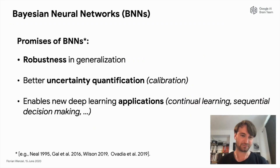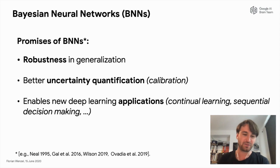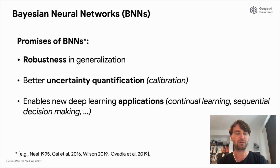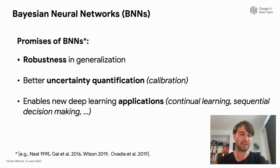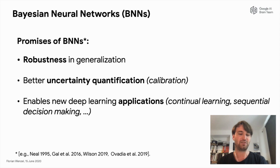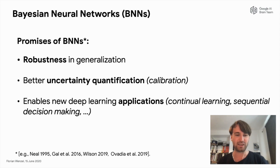There are many amazing promises coming with Bayesian neural networks. Because we average over multiple models, we expect BNNs to be more robust in generalization. Second, we expect that BNNs lead to better uncertainty estimates — these models know when they don't know. And finally, we are promised that BNNs are better suited for new deep learning applications like continual learning or sequential decision-making.